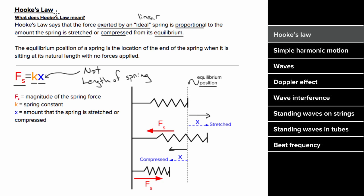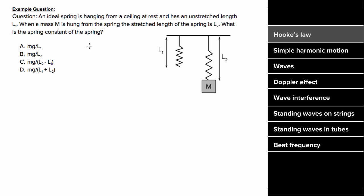What does an example problem involving Hooke's Law look like? Let's say an ideal spring is hanging from the ceiling at rest and it has an unstretched length L1, and then you hang a mass m from the spring at rest and it stretches the spring to a length L2. What is an expression for the spring constant of the spring?